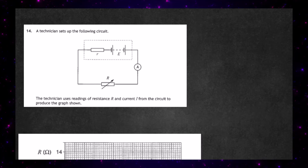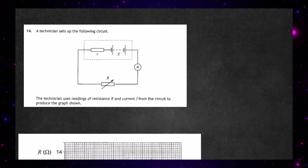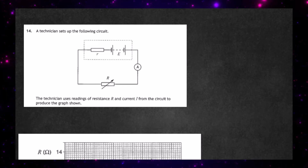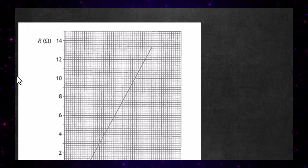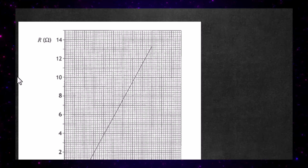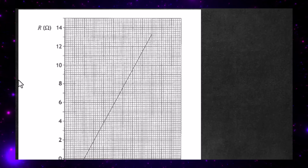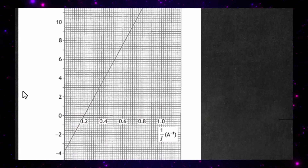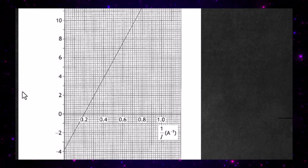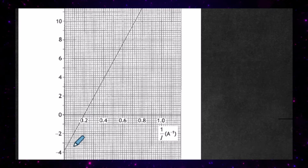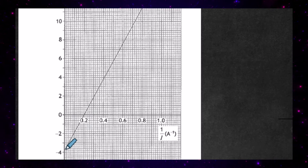The technician uses readings of resistance R and current I from the circuit to produce the graph shown. On the y-axis is the reading of the external resistance, and on the x-axis you have the relationship 1 divided by I. It's a straight line, and it passes through the y-axis or the R-axis.